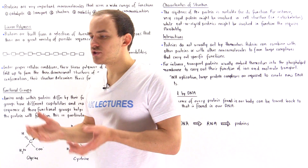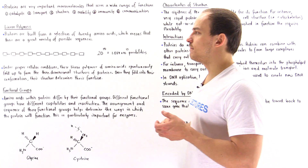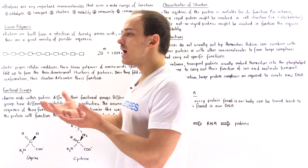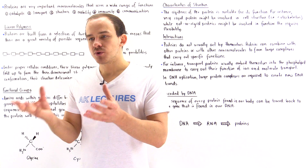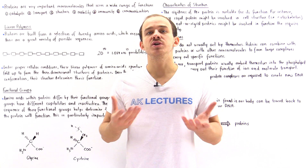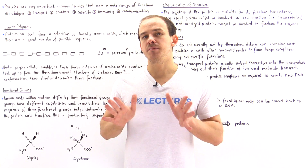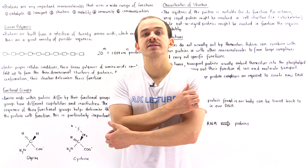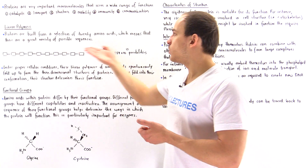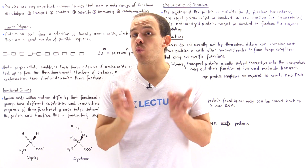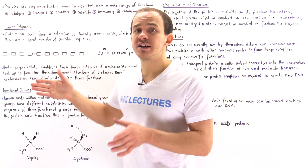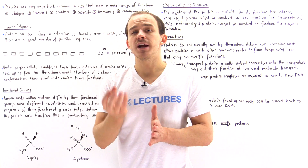So as we can see, proteins have many different types of functions. Now, what are proteins on the molecular level? Proteins basically consist of these subunits, these building blocks we call amino acids, and there are 20 types of amino acids that exist inside our body. Proteins are built from the selection of these 20 different amino acids.